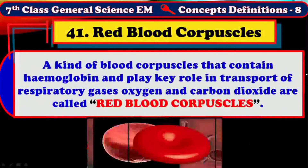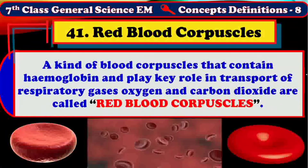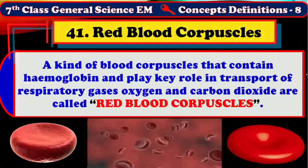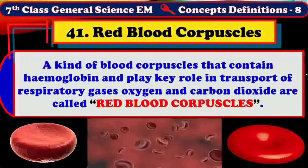A kind of blood corpuscle that contains hemoglobin and plays a key role in the transport of respiratory gases such as oxygen and carbon dioxide is called a red blood corpuscle, or RBC. These RBC are also called erythroids or erythrocytes. They exist in red color due to the presence of the respiratory pigment hemoglobin in the cytoplasm. The Dutch naturalist Jan Swammerdam was the first person to observe red blood corpuscles.